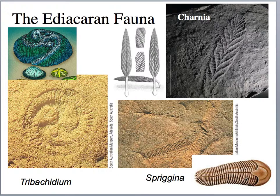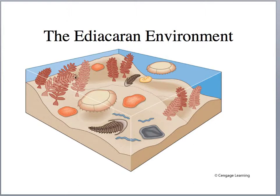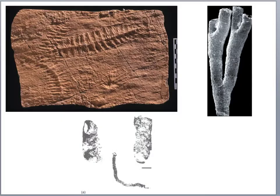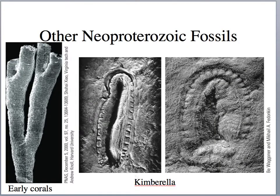Spriggina is this impression where we're seeing maybe the beginning of arthropods — an early arthropod. These date to about 635 to 560 million years old, a community of organisms living during this time. Here's that Charnia, and we also see some cone-shaped fossils that may be predecessors to corals. Then we have a fossil called Kimberella, which is probably a mollusk — maybe related to sea snails or abalone. This marks the beginnings of different phyla taking shape: arthropods, cnidarians for the corals, and mollusks for Kimberella.